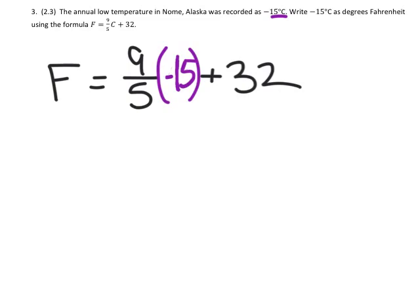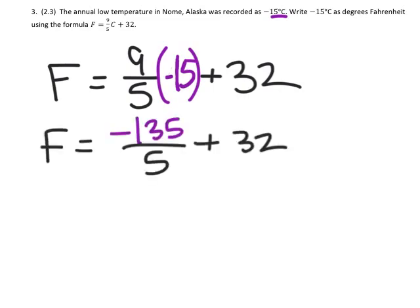We can do multiplication first. Some of you may know to cross simplify that negative 15 with the 5, but technically it's not going to matter what you do. Let's go ahead and just multiply the 9 and the negative 15. We would just treat the negative 15 like a fraction, so that means 9 times that negative 15 gives us negative 135, and that's all divided by 5.